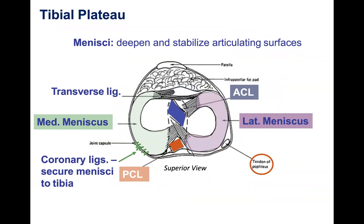Now let's talk about the tibial plateau. We've taken the femur out of the way and we're looking at a superior view of the tibia. The tibial plateau is what articulates with the femur through the femoral condyles. We call it the weight-bearing surface of the knee because all the weight transferred from the femur goes onto this surface. None of the weight goes onto the fibula, which is another shin bone.